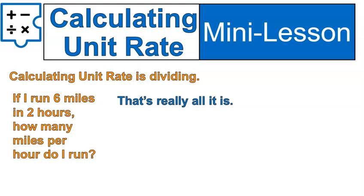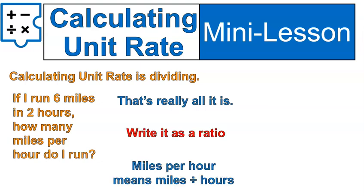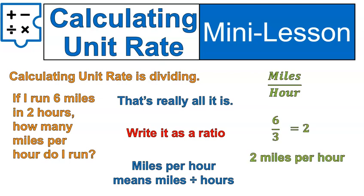If I run six miles in two hours, how many miles per hour do I run? You would write it as a ratio — miles per hour. You would have six over three, which equals two. Two miles per hour. I could also write it as six over three equals two over one, or as a ratio in colon form. Okay, this is unit rate.